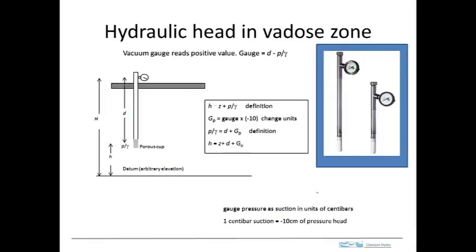We want to measure the hydraulic head in the VEDO zone. We've measured hydraulic head in the saturated zone using a piezometer — basically a pipe with a porous tip at the end — where the head in the pipe equilibrates with the head in the aquifer. But we can't do that in the VEDO zone using the same kind of porous sand pack, because the pressure in the VEDO zone is negative and all the water would simply get sucked out of the piezometer.